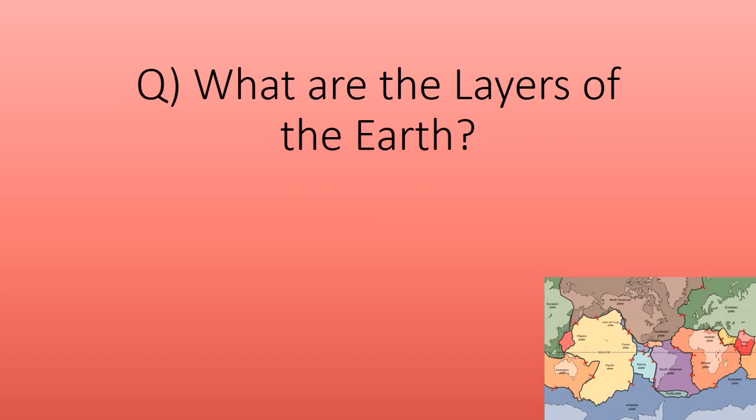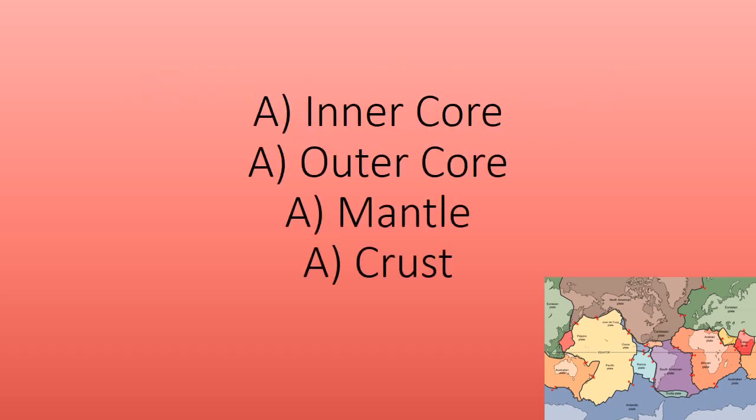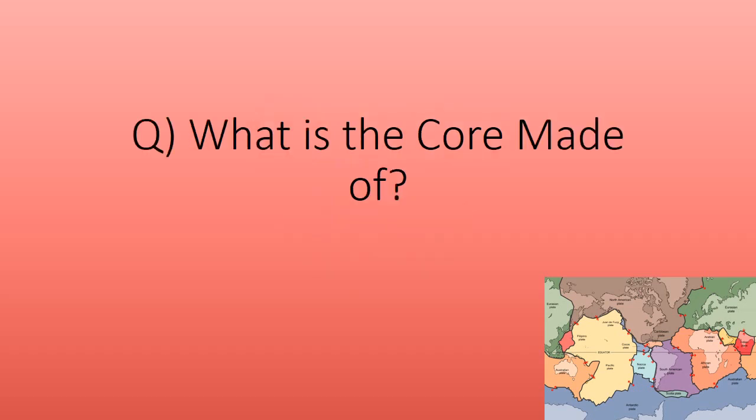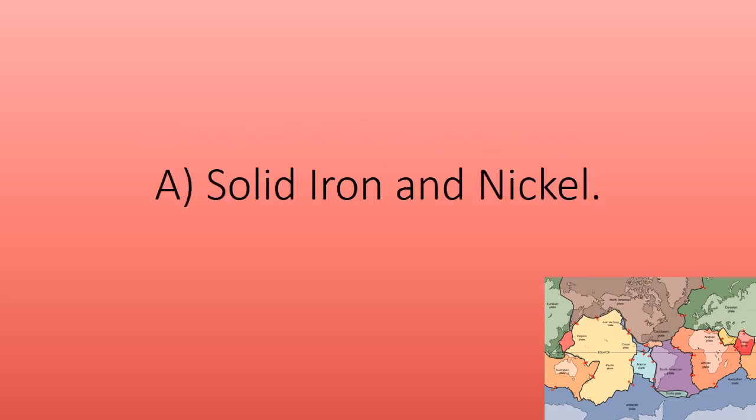What are the layers of the earth? Inner core, outer core, mantle, and iron. The inner core is made of solid iron and nickel.